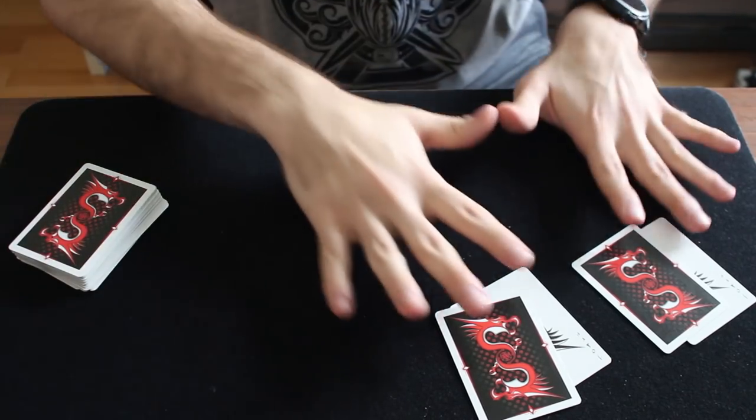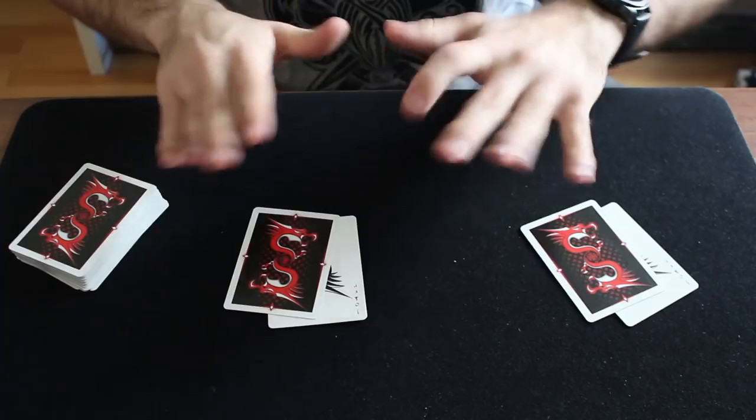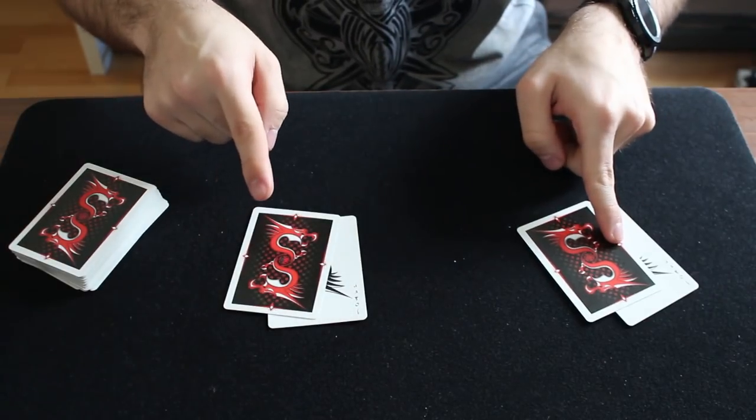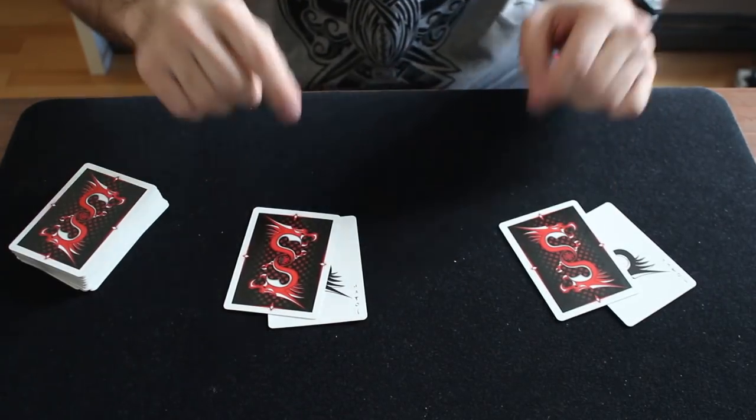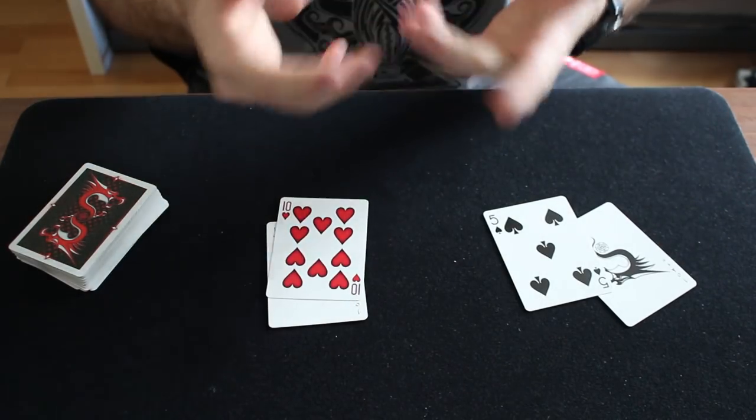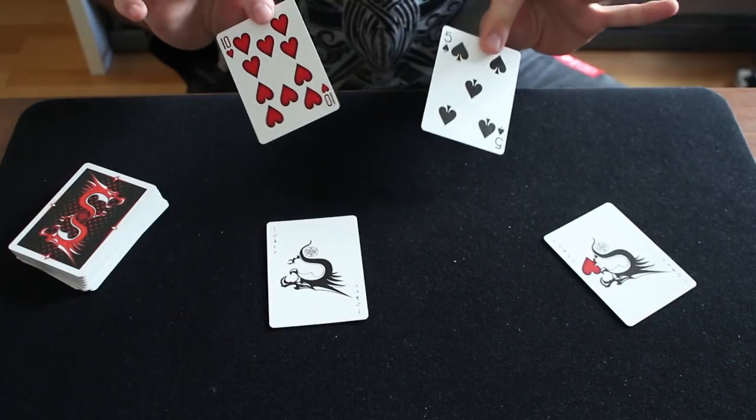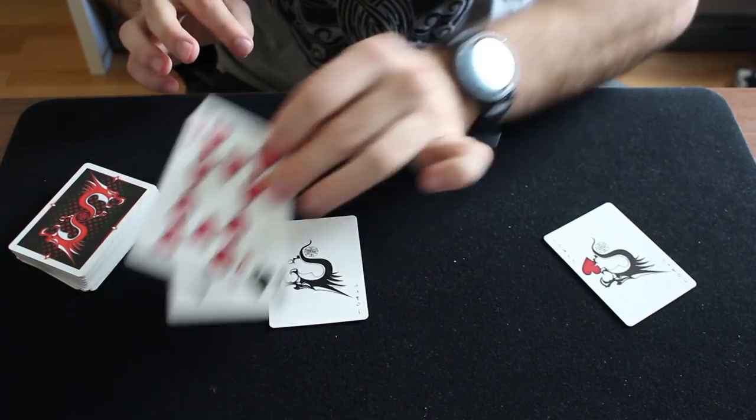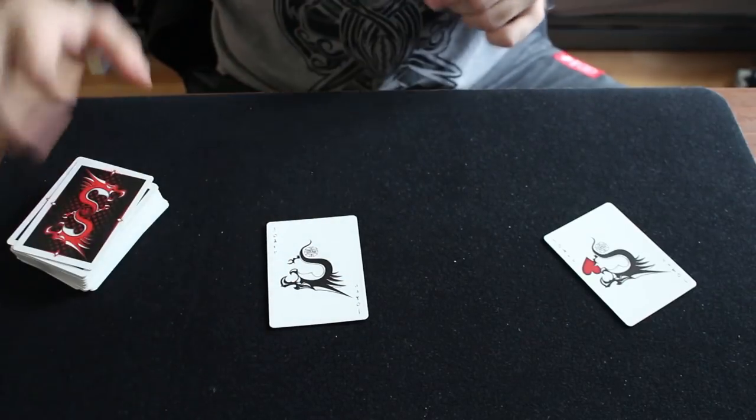Now you say whatever cards these facing down cards are, you know one of them is the 10, the other one is the 5. You will add up the numbers, the values. You turn them around, the 10 and 5, it equals 15.